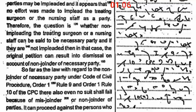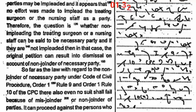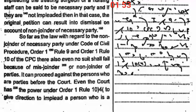Therefore, the question is whether non-impleading the treating surgeon or the nursing staff can be said to be a necessary party, and if they are not impleaded, whether the original petition can result in dismissal on account of non-joinder of necessary party. So far as the law with regard to non-joinder of necessary party under Code of Civil Procedure Order 1 Rule 9 and Order 1 Rule 10, no suit shall fail because of misjoinder or non-joinder of parties. It can proceed against the persons who are parties before the court.